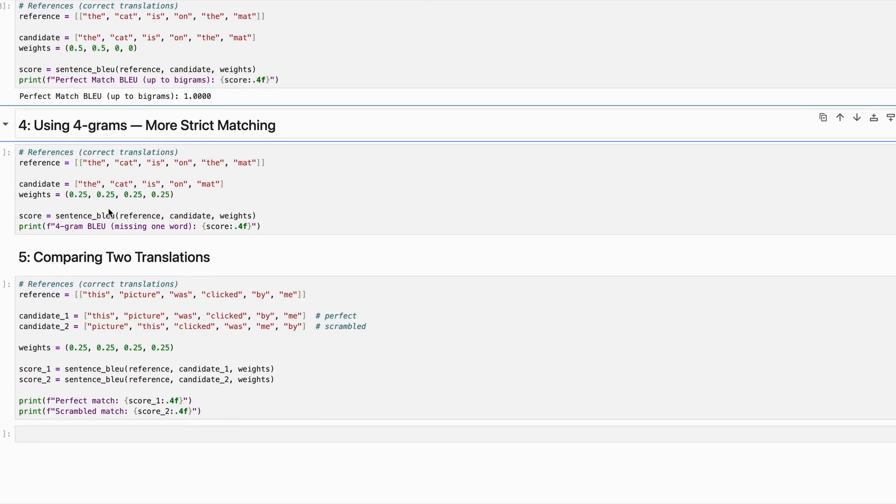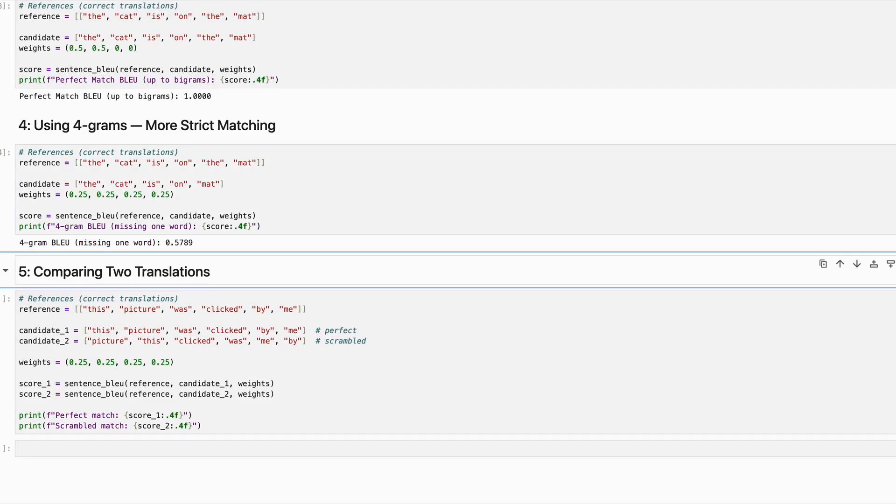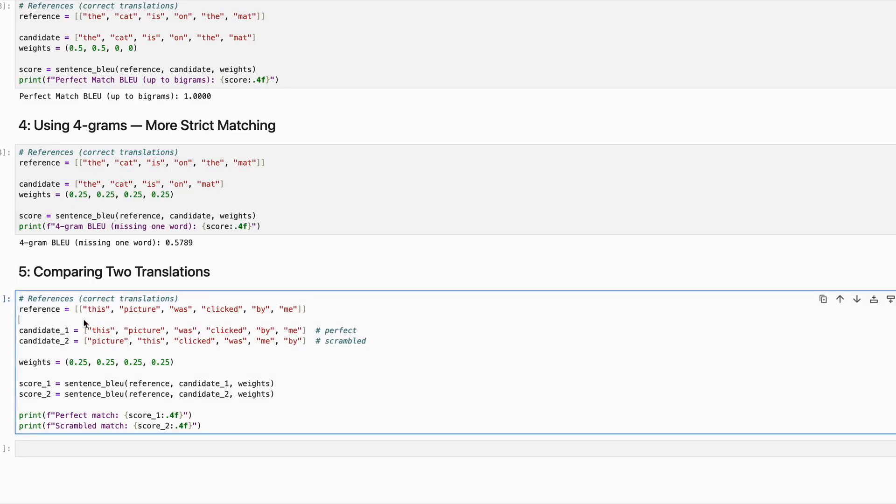Now there are drawbacks if we go to four-gram, because then the matches become exact. So you can see now that four-gram BLEU score, even with one missing word, it is 0.5789.